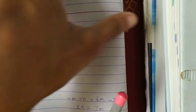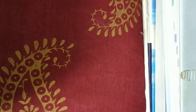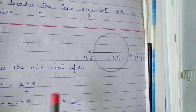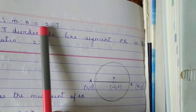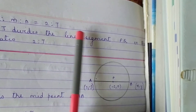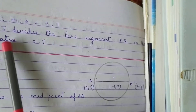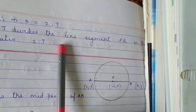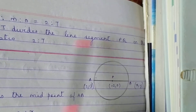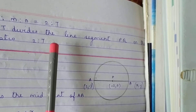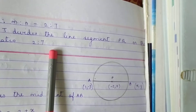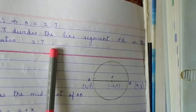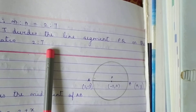Therefore M is to N equals 2 is to 7. The point T divides the line segment PQ in the ratio 2 is to 7. This is how question number 3 has to be done.